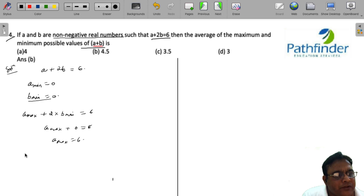What about B max? The maximum of B is when A is equal to 0. So you have 0 plus 2B max is equal to 6. So the maximum value of B is 3.